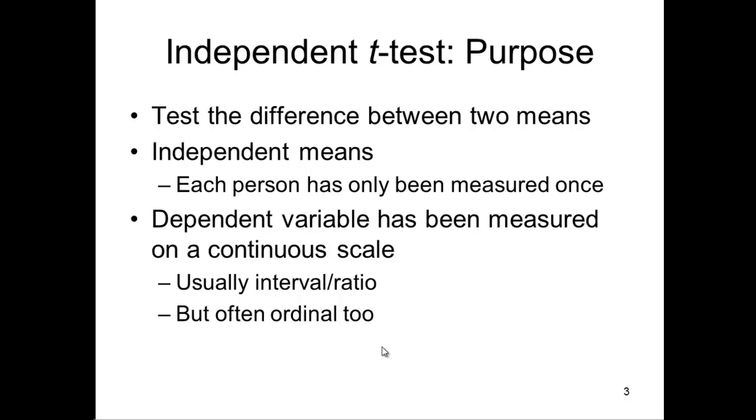I just mentioned briefly, sometimes people will do an independent t-test on a dependent variable measured on an ordinal scale, but that's more an advanced topic about whether you should be able to do that or not. Typically we only talk about interval ratio. Now brain volume would be one of those interval ratio scales. In fact it's ratio.